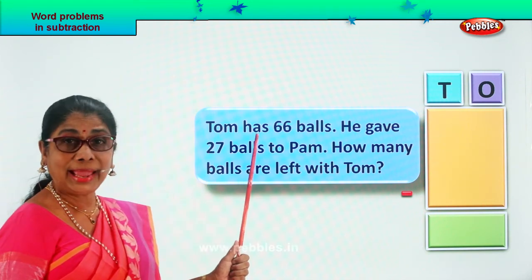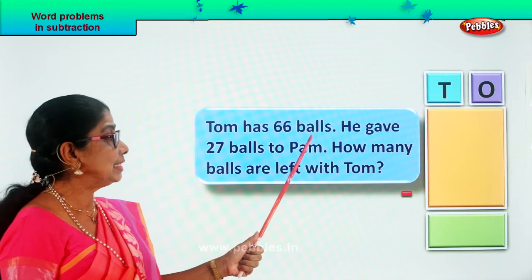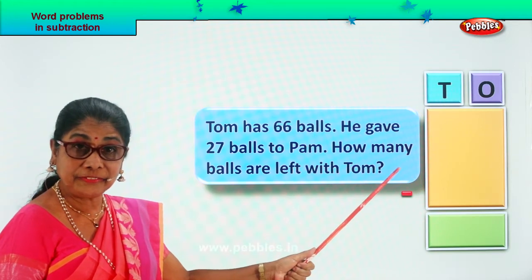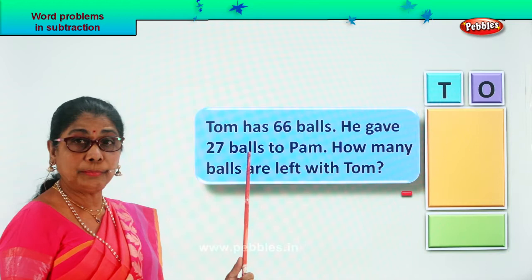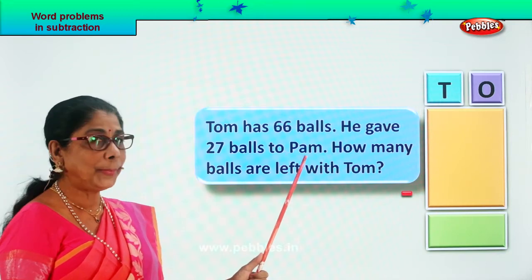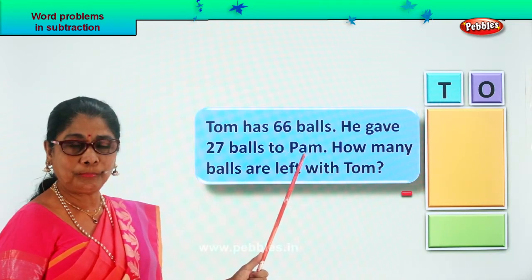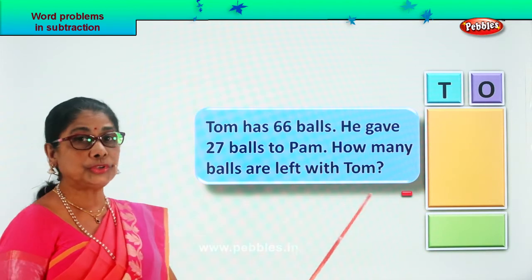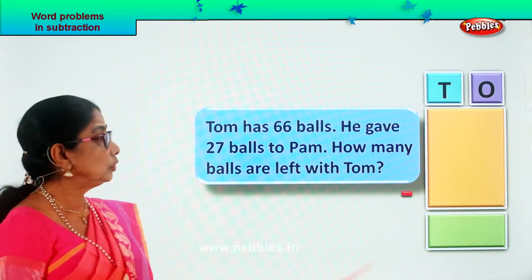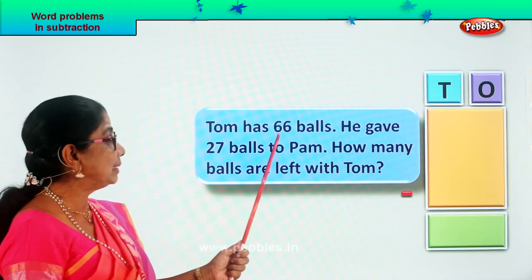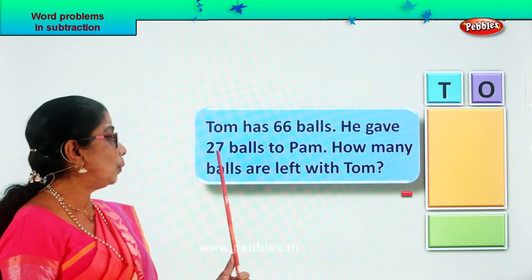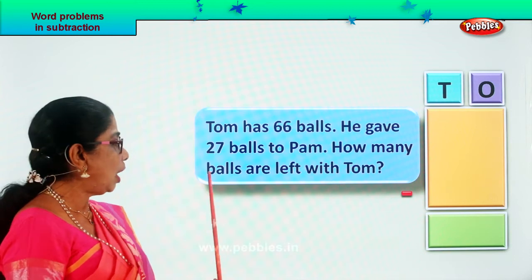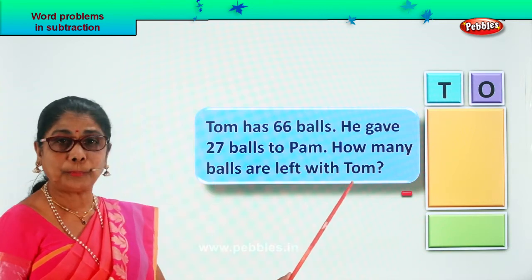Tom has 66 balls. He gave 27 balls to Pam. How many balls are left with Tom? So Tom has 66 balls and he gives away to Pam 27. Now the question is, how many balls are left with Tom?